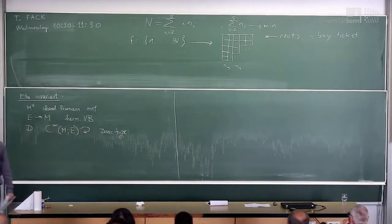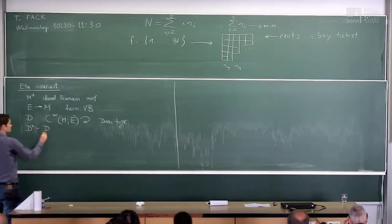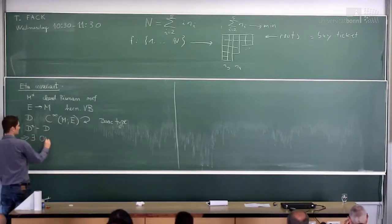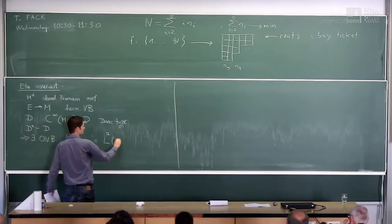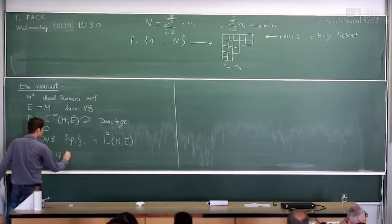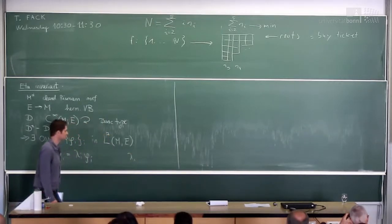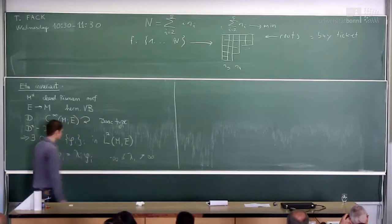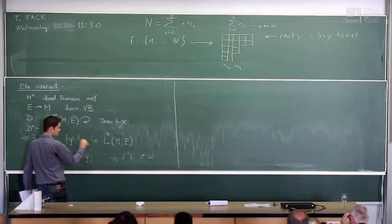Dirac type, of course, just means that the square is of Laplace type. Assuming also that this is self-adjoint, so D-star equals D. Then there exists an orthonormal basis in L2 — in the space of L2 sections with values in that vector bundle — consisting of eigensections of the Dirac operator with eigenvalues Lambda_i. You can arrange these so that they go to plus infinity and to minus infinity as i goes to minus infinity. Of course the spectrum is not semi-bounded, unlike the Laplace operator, so the index runs over Z rather than N.